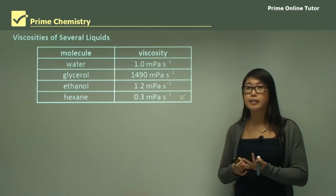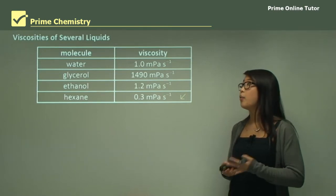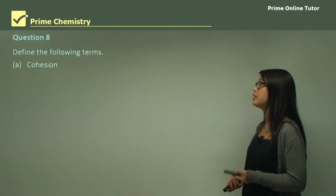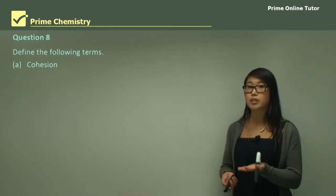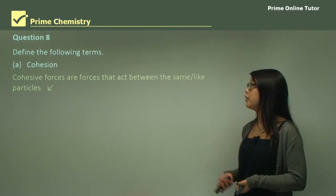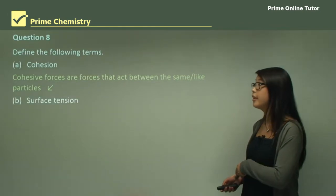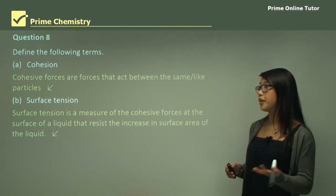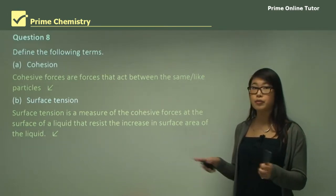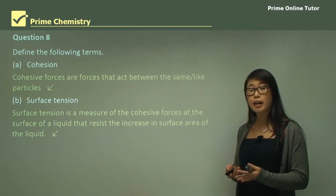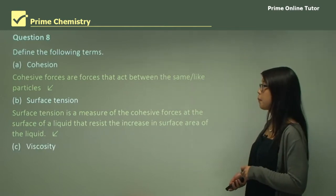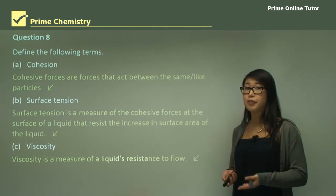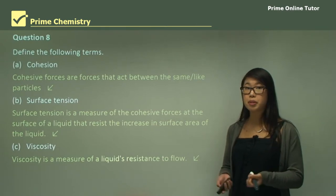In summary, the properties of water include cohesive forces — like and like — adhesive forces — unlike, so water and glass — viscosity — how much it can flow — and surface tension. To define these terms: cohesion is the attractive force between like particles; surface tension is a measure of cohesive forces at the surface of a liquid that resists increase in surface area; and viscosity is a measure of the liquid's resistance to flow — high viscosity is like honey, low viscosity is like petrol.